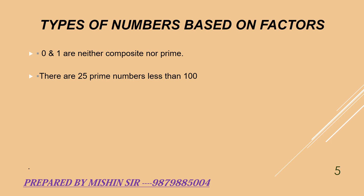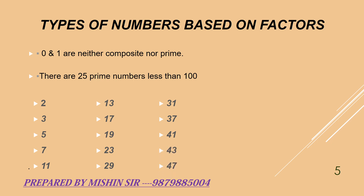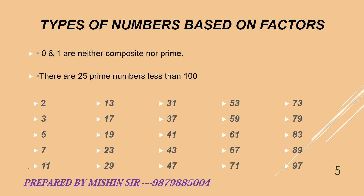The list of 25 prime numbers less than 100 is as follows: 2, 3, 5, 7, 11, 13, 17, 19, 23, 29, 31, 37, 41, 43, 47, 53, 59, 61, 67, 71, 73, 79, 83, 89, 97. These are the 25 prime numbers which are less than 100.